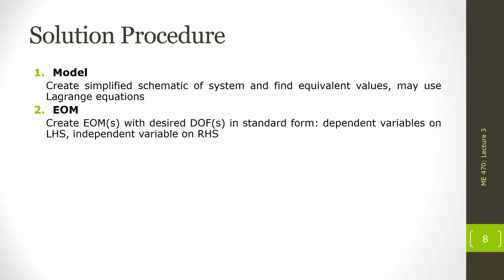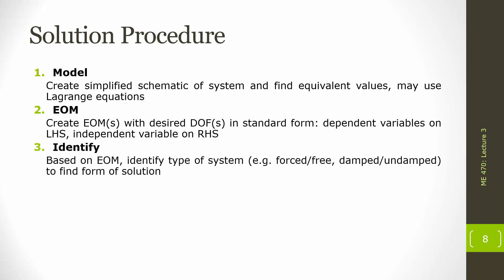Once we have our equation of motion, we move to the identify step. We look at the equation of motion to determine what type of system we have. For example, is the x-dot term present on the left-hand side? That tells us if it's damped or undamped. Is the right-hand side zero — a homogeneous equation? Then we have free vibrations. Is it non-zero? Then it's a forced system with a different solution procedure. We also look at how many independent degrees of freedom we have — is this a 1DOF or 2DOF system? Is it linear or non-linear? All of these characteristics, just from looking at the equation of motion, set us on the path to determine how to solve for our independent variable.